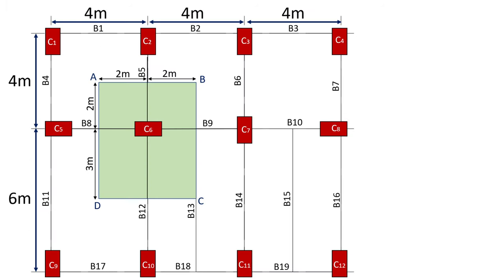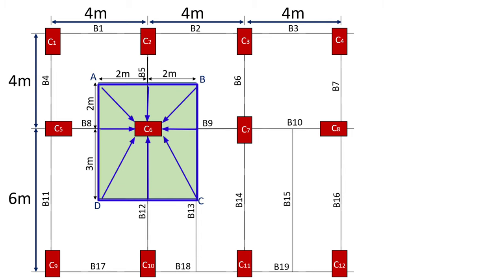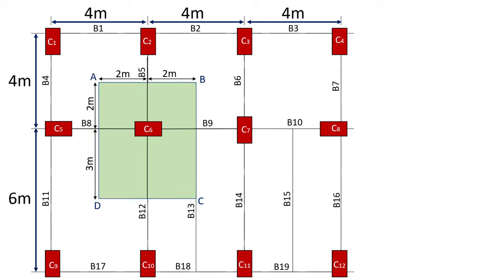To calculate the actual load on column 6, the total load on this column equals the load transferred from the highlighted area ABCD surrounding this column plus the self weight of the column. In other words, the total load on column 6 equals the load transferred from its connected elements — including beams, walls, and slabs — plus the self weight of the column. The dimensions of area ABCD cover half the length of its connected beams B8, B9, B5, and B12.